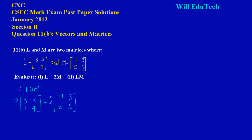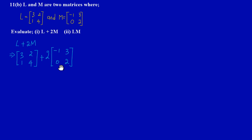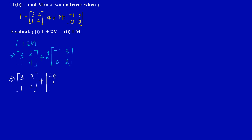First I'll be multiplying the matrix M by a scalar quantity of 2, which simply means I'm doubling this matrix. So I would have the matrix 3 2 1 4, and then for 2M I'm doubling each value: 2 times negative 1 gives negative 2, 2 times 3 gives 6, 2 times 0 is 0, and 2 times 2 is 4.